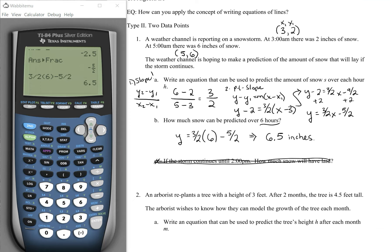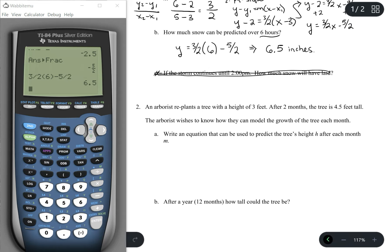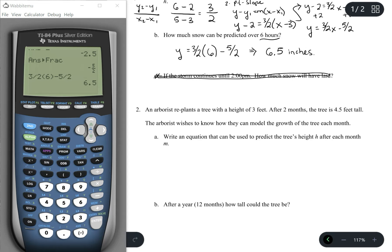As for number 2, it's a similar question. An arborist replants a tree at the height of 3 feet. After 2 months, the tree is 4.5 feet tall. So he starts at time 0 with 3 feet. After 2 months, the tree is 4.5. So those are our 2 points for this particular example.